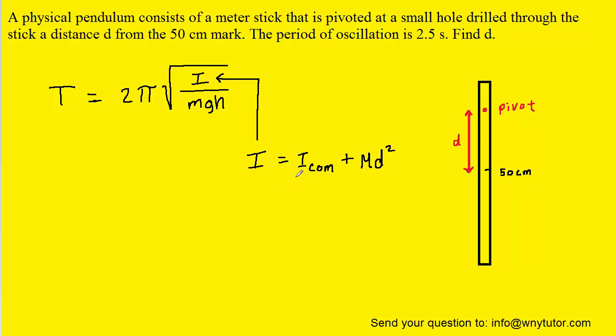We also know that a thin rod, which essentially is what a meter stick is, has a rotational inertia about its center of mass equal to mL²/12, where L would be the full length of the rod, in this case one meter. So we're going to replace I with this expression for the rotational inertia.